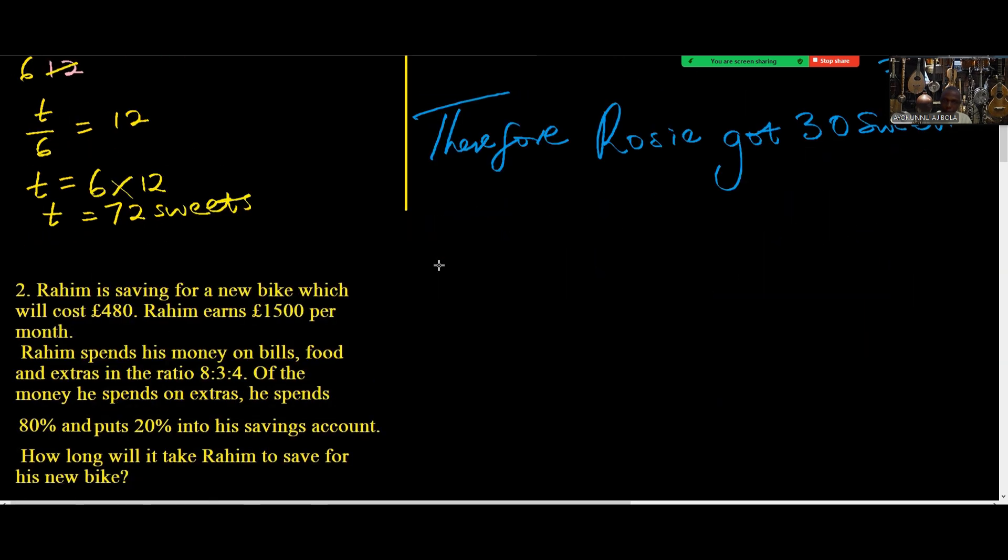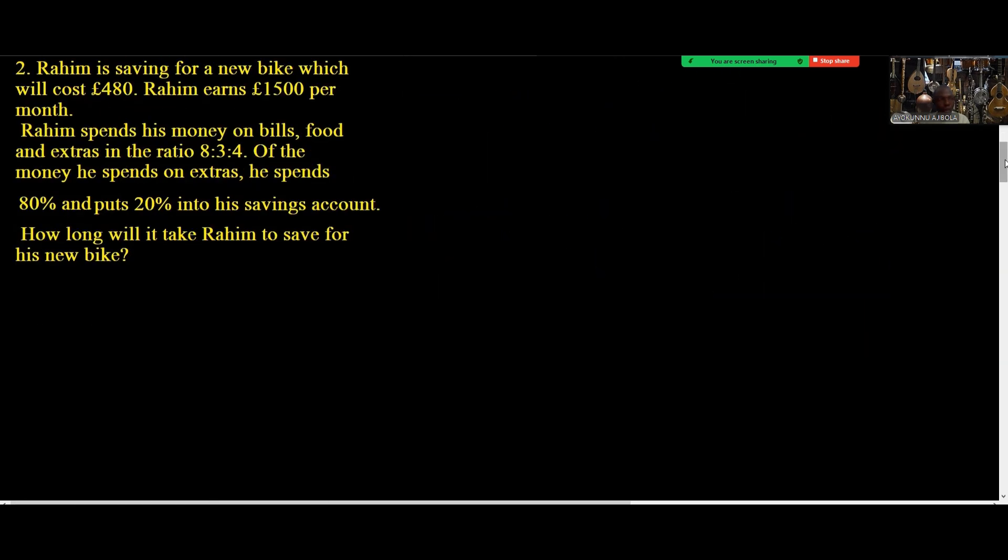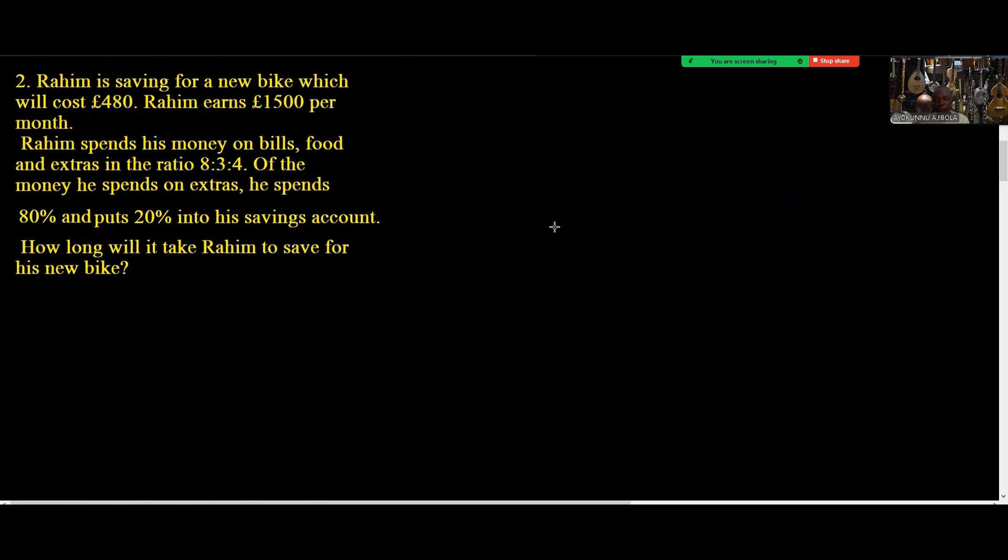Now we're looking at the second one. Do you understand that? Okay, good. Now for the second one, Rahim is saving for a new bike which will cost £480.